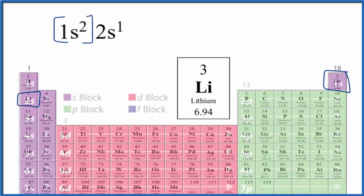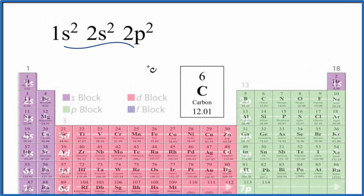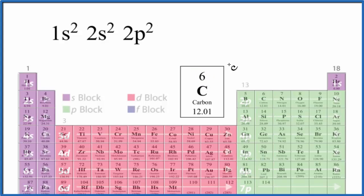That gives us the condensed electron configuration — it didn't really save us much trouble, but lithium is the simplest condensed electron configuration there is. Now pause and try this one: here's the full electron configuration for carbon, which has six protons and six electrons. Write the condensed electron configuration for carbon.